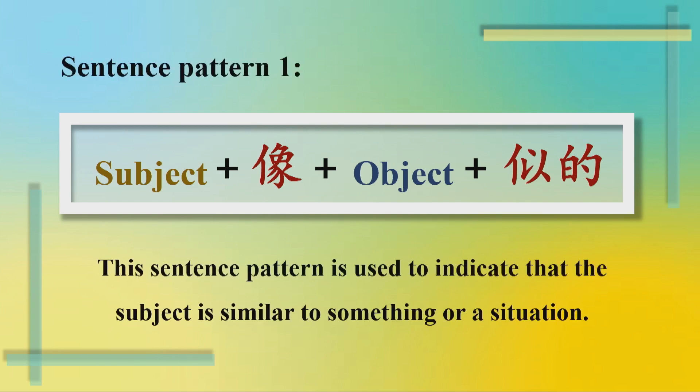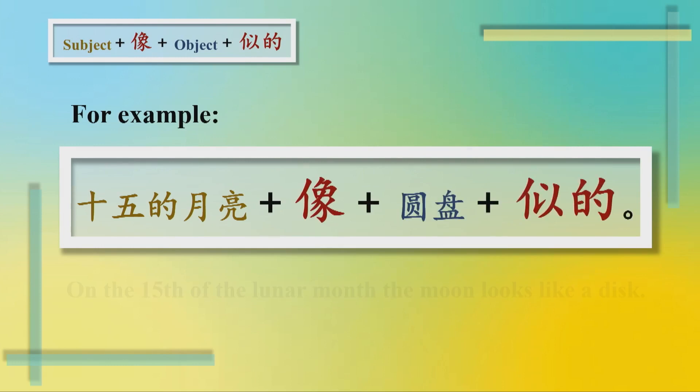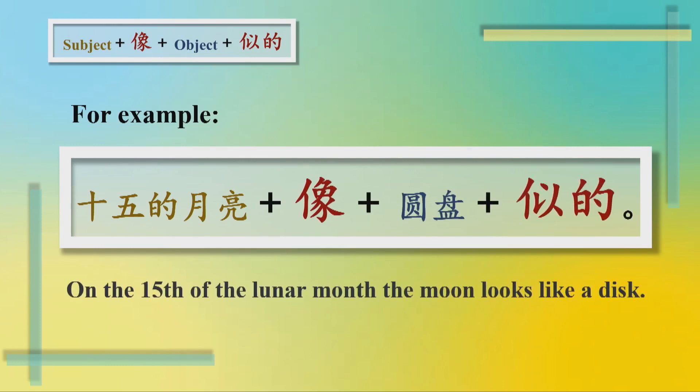Sentence pattern 1: Subject plus 像 plus object plus 是的. This sentence pattern is used to indicate that the subject is similar to something or a situation. For example: 十五的月亮像圆盘是的。